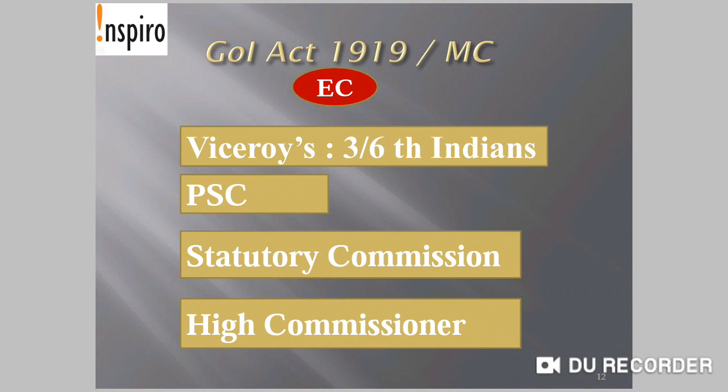Executive-related provisions under the Government of India Act 1919: the Viceroy's Executive Council would now have 3 out of 6 members as Indians. A new Public Service Commission was formed, and a statutory commission was decided to be constituted for studying the working of the constitutional system in India. A High Commissioner post was also formed in London, with some functions of the Secretary of State transferred to the High Commissioner.